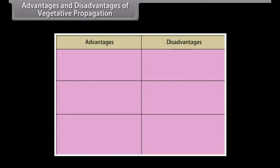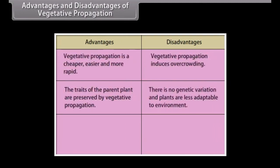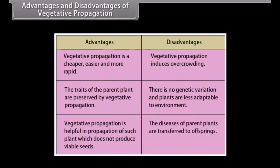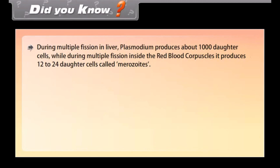Advantages and disadvantages of vegetative propagation. Did you know — during multiple fission in the liver, Plasmodium produces about 1000 daughter cells, while during multiple fission inside the red blood corpuscles, it produces 12 to 24 daughter cells called merozoites.